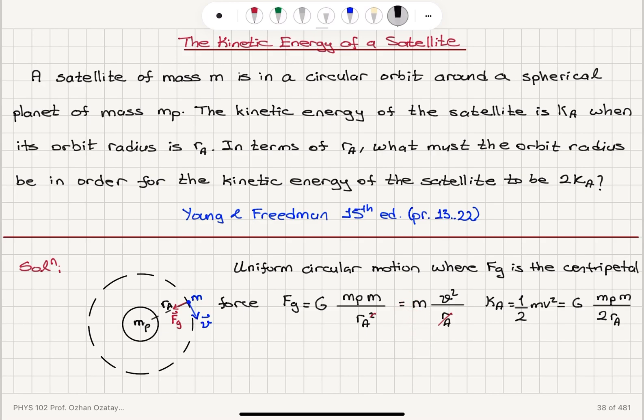Now, at a different orbit with the orbital radius r sub b, I have a new kinetic energy which is twice the kinetic energy at the orbital radius r sub a. So this is basically G mp times m divided by r a, and this is equal to, for the new radius, G mp times m over 2 r b.